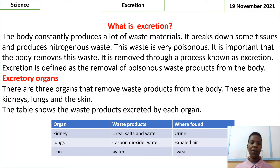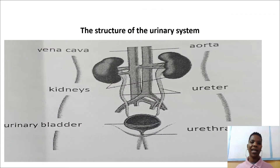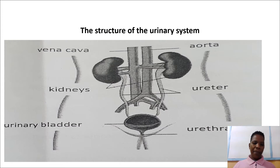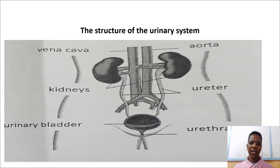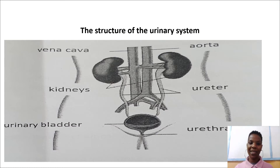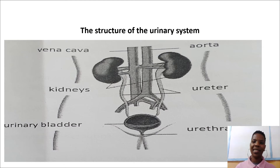Now I want us to look at the structure of the urinary system. The blood from the heart reaches the kidney through the aorta over here. This then branches into the kidneys. The diagram shows parts of the urinary system: we have the vena cava, we have the kidneys, we have the urinary bladder, we have the aorta, the ureter and the urethra.